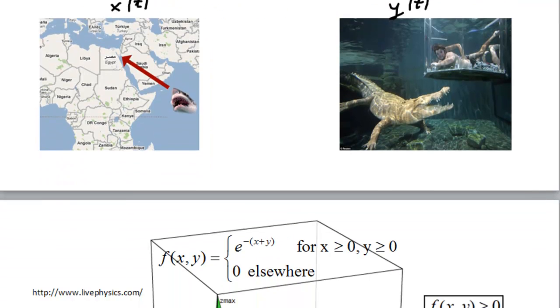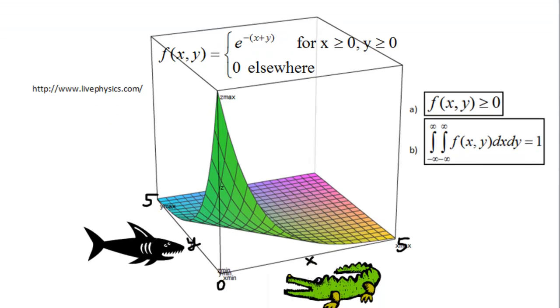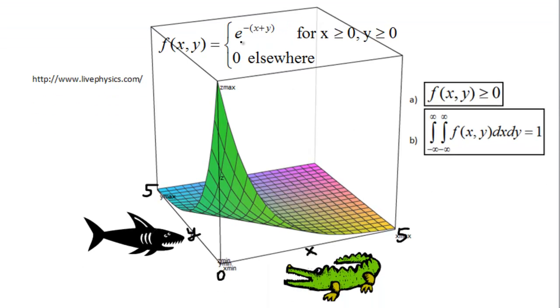So what I've done here, I use this website, livephysics.com, and I graphed the probability density function that we are given to model the joint distribution of these two arrival times. And as you can see, we could actually, before we proceed analyzing this further, we could actually verify whether this PDF that is given here is valid.